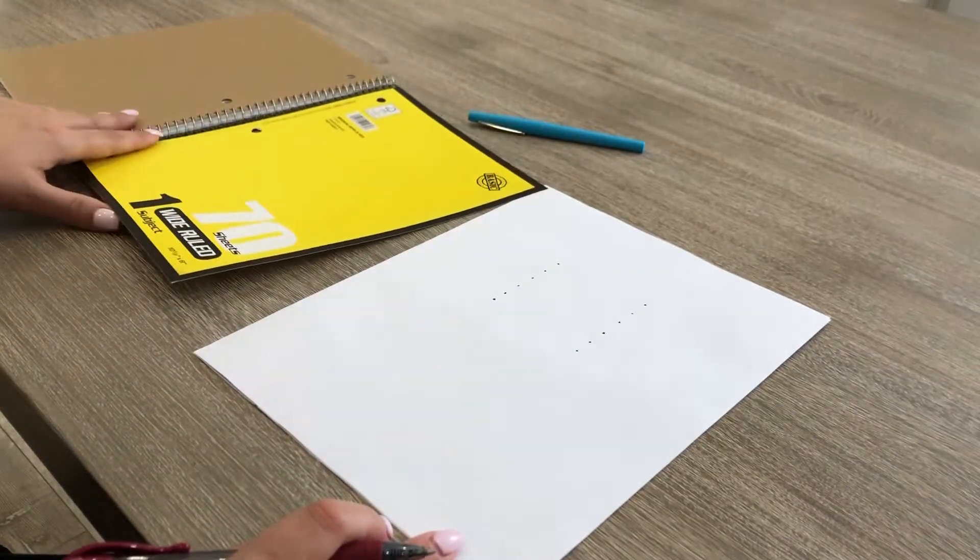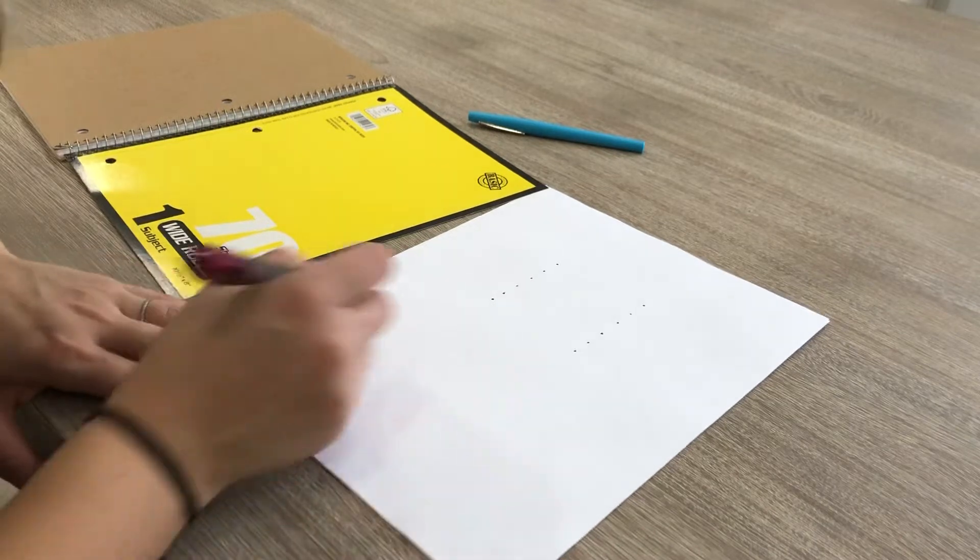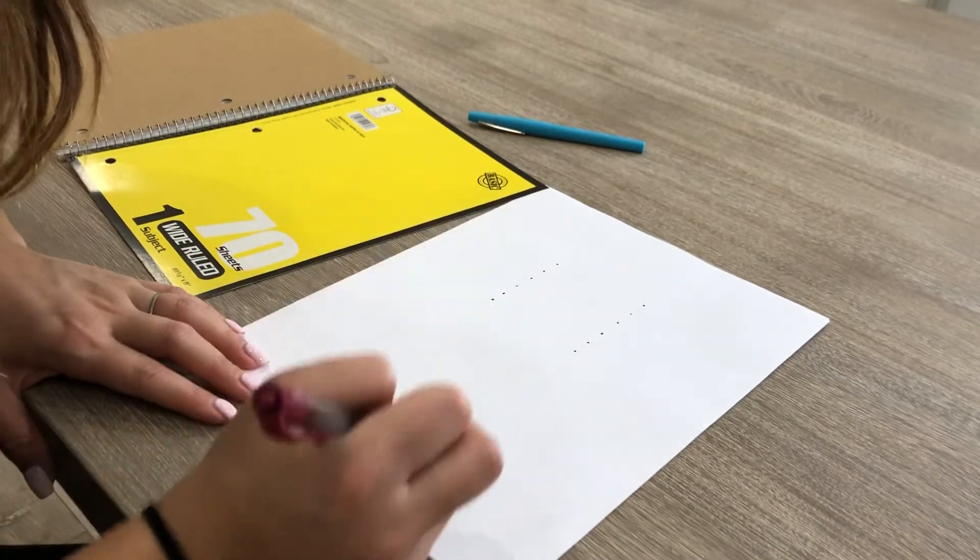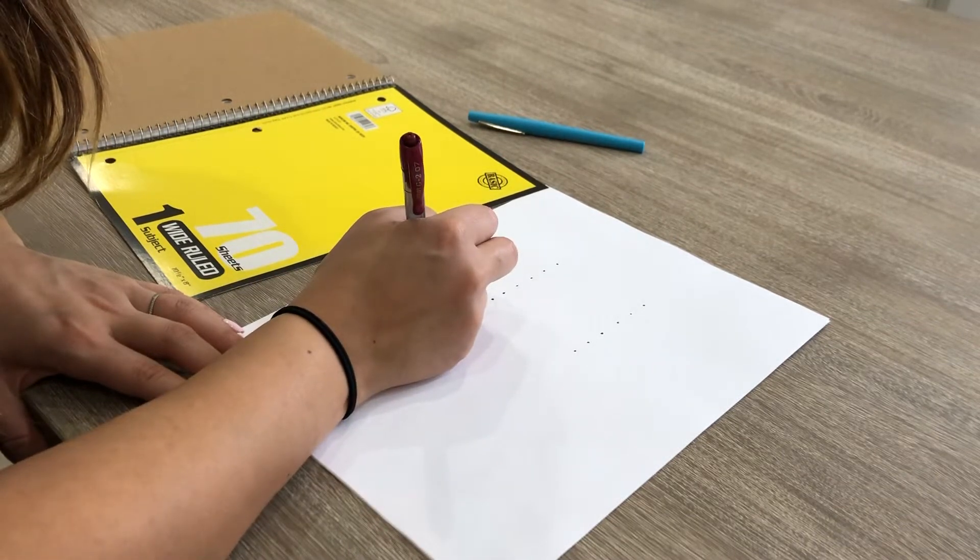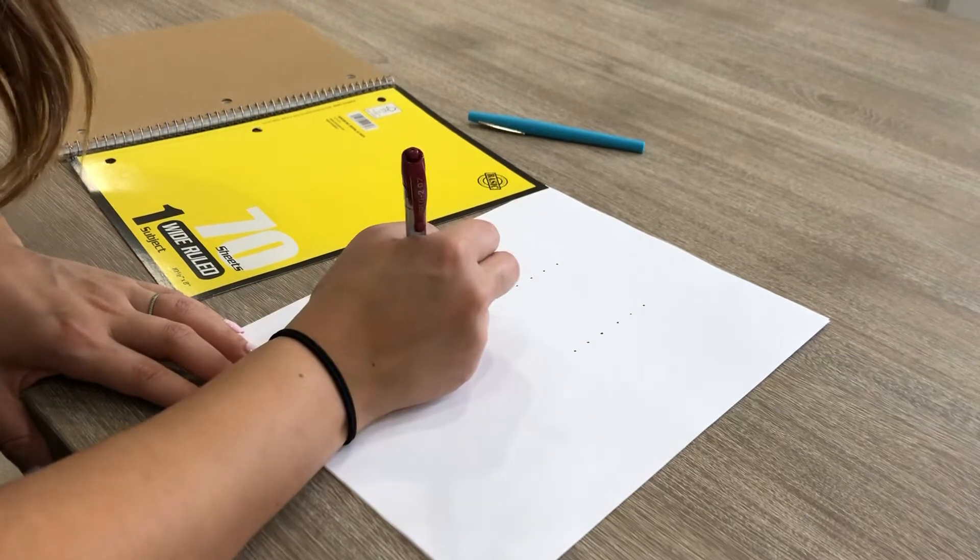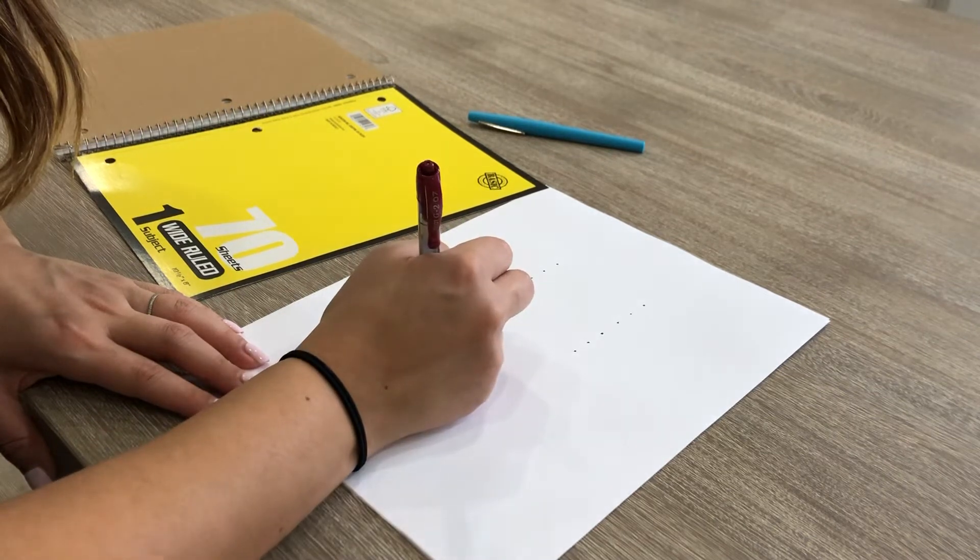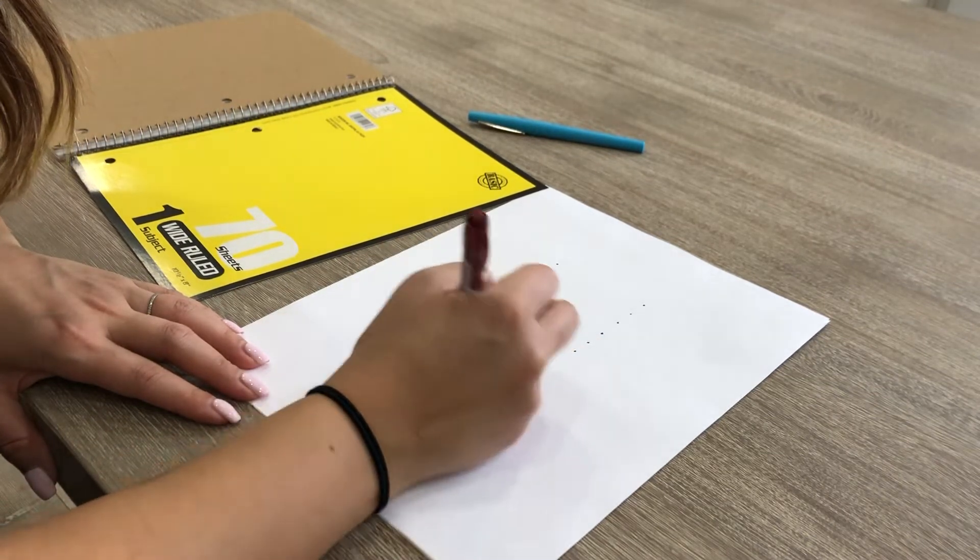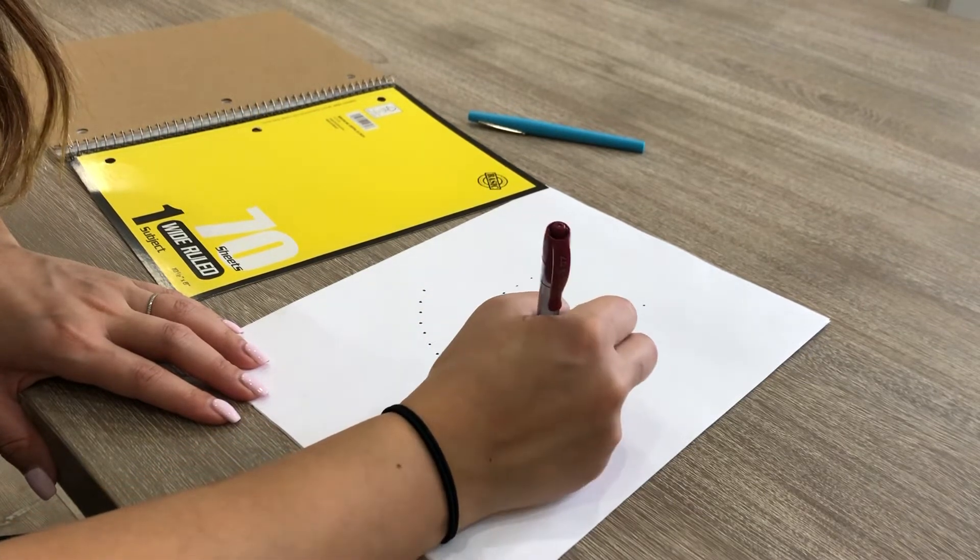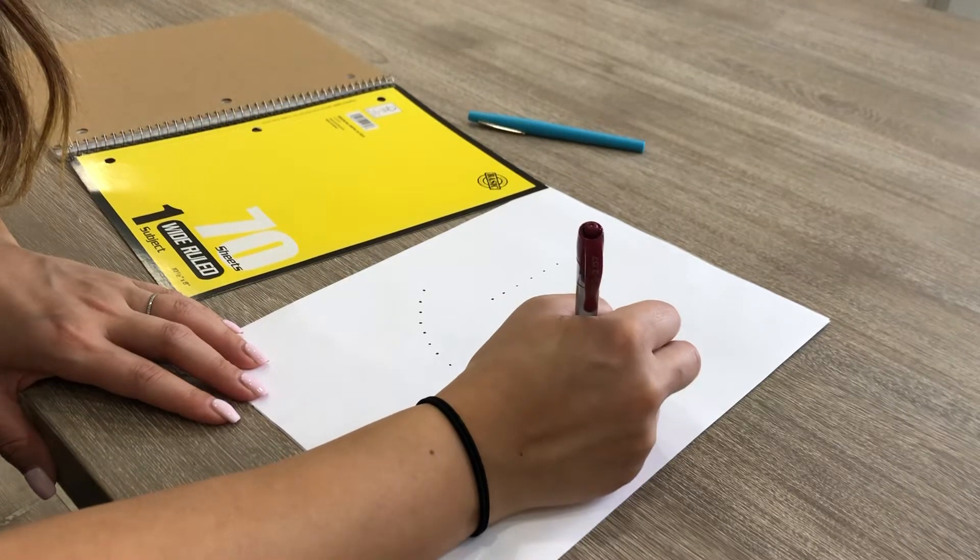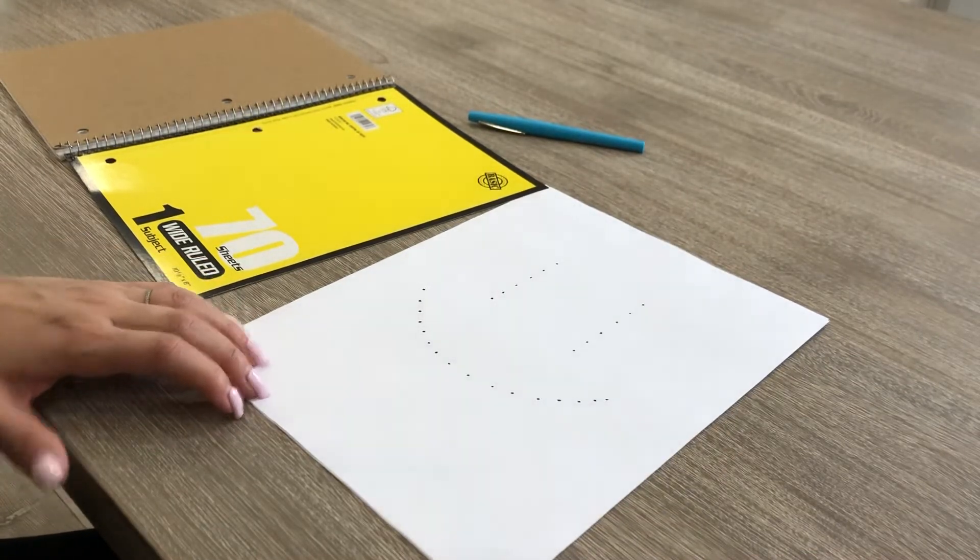Okay, so what you want to do next for a happy or smiley face is do the smile. So I would like to start right here. You can start wherever you like. So here's one dot, two, three, four, five, six. As you can see, it's starting to look like a happy face.